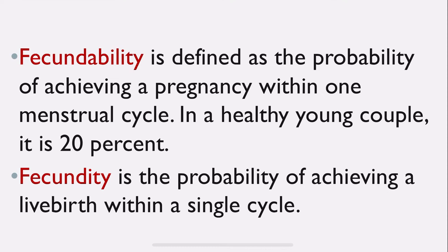Two terms are given here: fecundability and fecundity. Gynecologists studied the mean average time for a woman to conceive to set a limit for considering infertility. Fecundability is defined as the probability of achieving a pregnancy within one menstrual cycle. In a healthy young couple it is 20%, meaning only 20% of couples having regular unprotected coitus for one month will conceive. People should wait patiently and not panic if they are only within 6 to 8 months of married life.